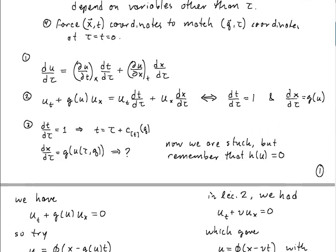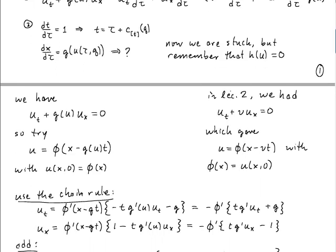Okay, so if I make those two choices, then we find that dt/dτ gives me, quite trivially, from integration, t equals tau plus some constant that can be a function of the new coordinate q. But here we get stuck, right? So we have dx/dτ is g, which depends on u, which depends on t and q, and so there's no way we can do this integration directly.